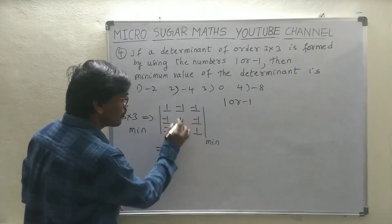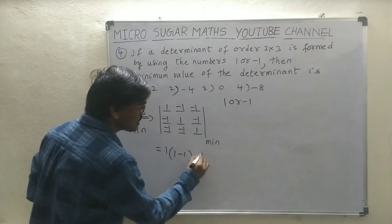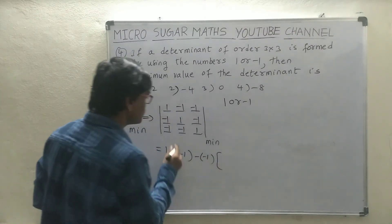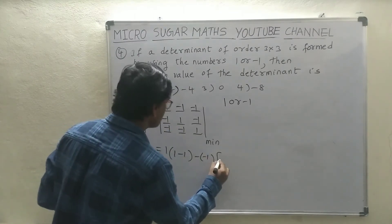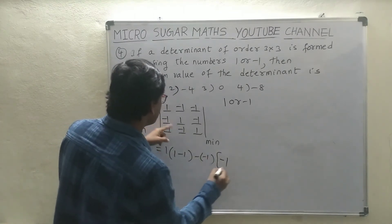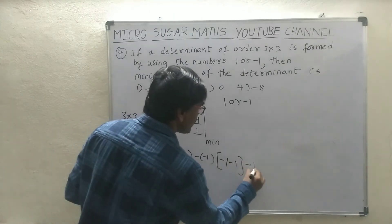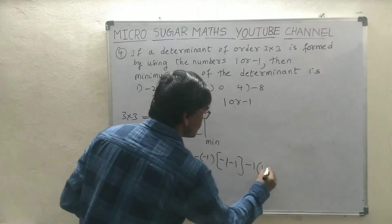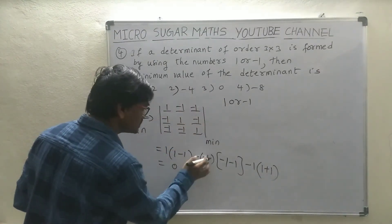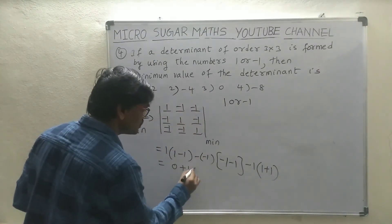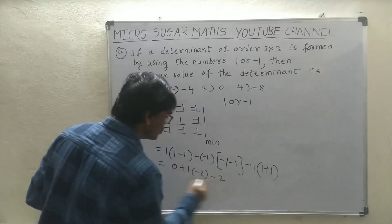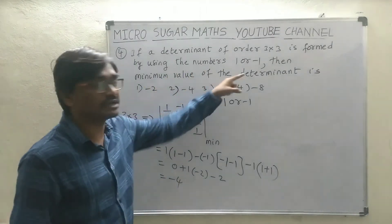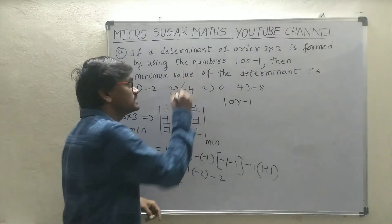Find out the determinant: 1 into (1, minus 1), minus of (minus 1 into minus 1, minus 1), plus (minus 1 into minus 1 into 1). Therefore, finally: 0, minus into minus is plus, plus 1 into minus 2, minus 2. Therefore minus 4 is our required minimum determinant. Therefore your option is the second option.